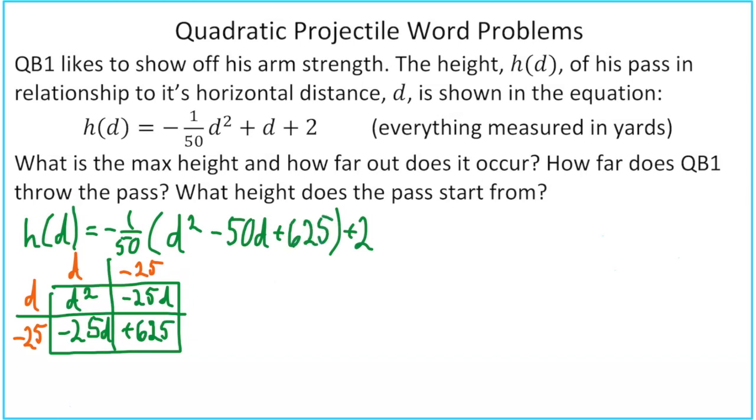That can go in the space we have waiting for it. Now remember, that 625 is actually being affected by the negative 1/50. So we actually have to go 625 divided by 50, and that would be negative 12.5. On the outside, we do the opposite, which is positive 12.5. From here, we can go ahead and simplify to vertex form. So there's our vertex form, and from that we can easily get our vertex.